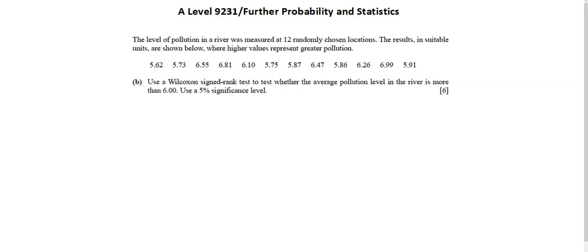The level of pollution in a river was measured at 12 randomly chosen locations. The results in suitable units are shown below, where higher values represent greater pollution. Requirement B: use a Wilcoxon signed rank test to test whether the average pollution level in the river is more than 6.00. Use a 5% significance level.